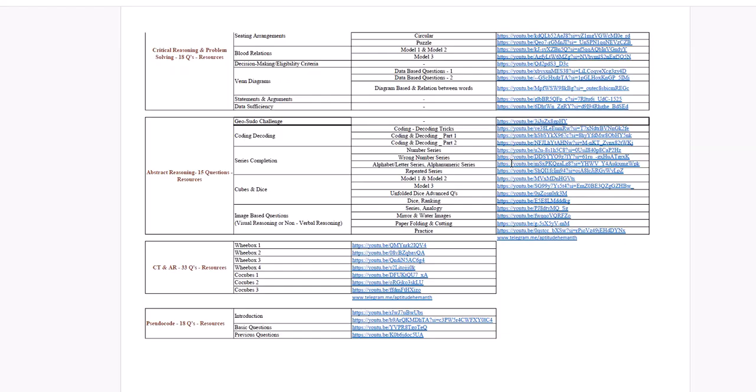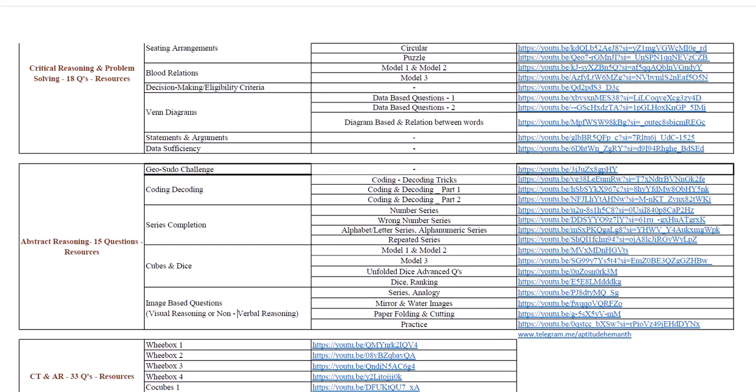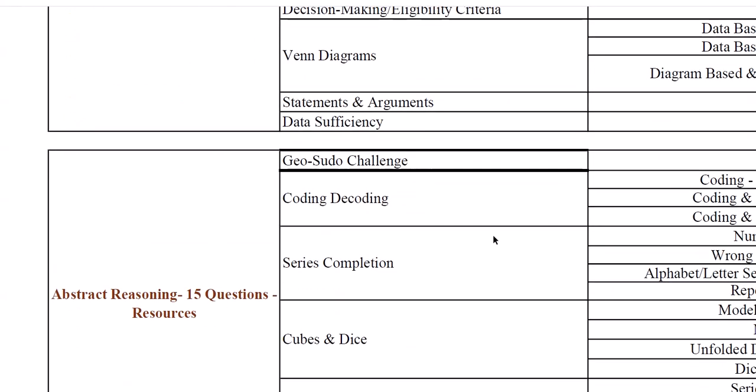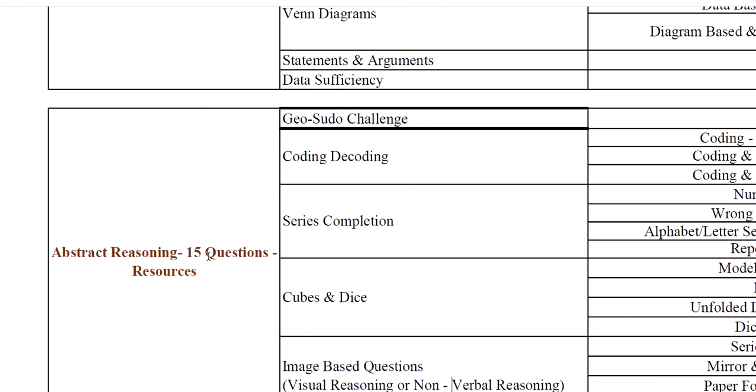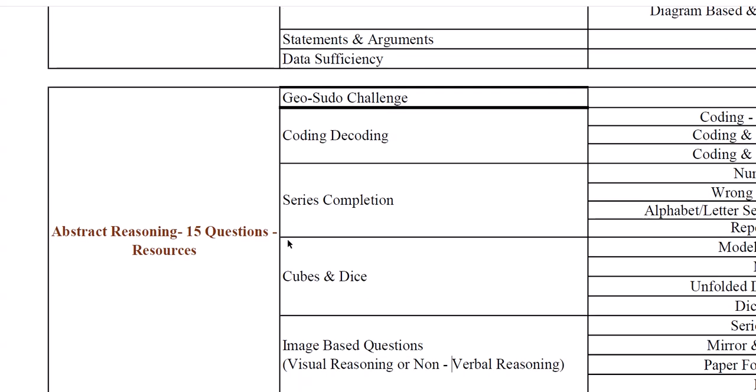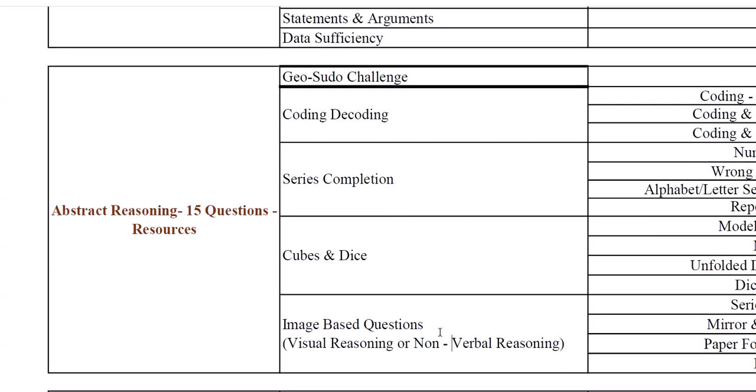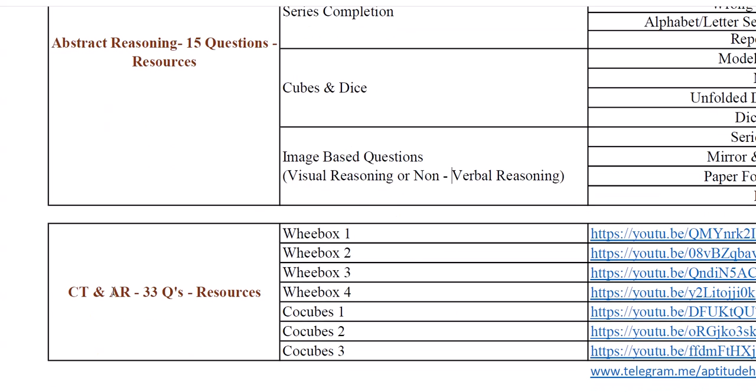In abstract reasoning, here like that we are given a section. Cubes and dice one question possible, that also need to be added. Here abstract reasoning, 15 questions, geo pseudo challenge, coding and decoding, series completion, image based question but actually analogy and odd one out is there. I don't have resources to keep there but what I did is at the end CT means critical thinking, AR means abstract reasoning so those videos, entire section CT, what type of questions, entire one section AR, what type of questions will be asked and how to prepare everything is given, you can go through this for a base.